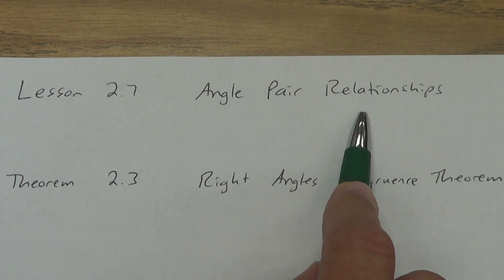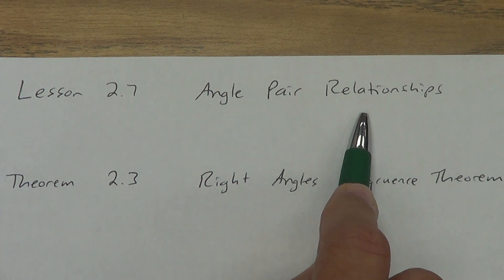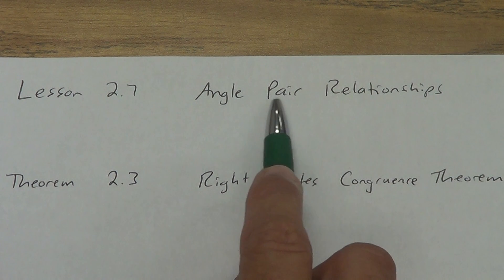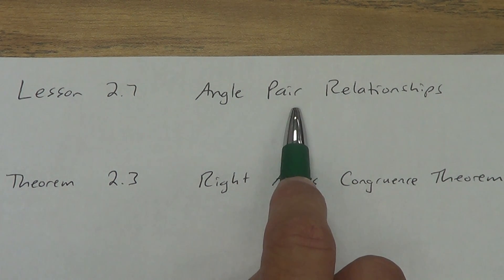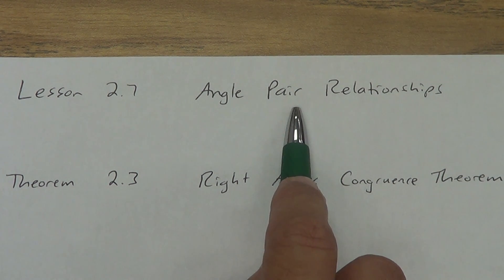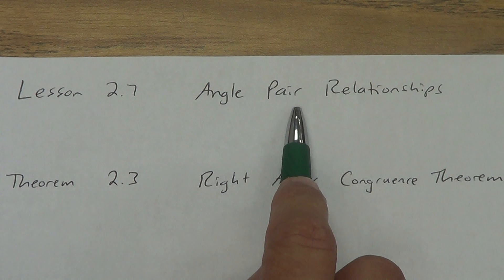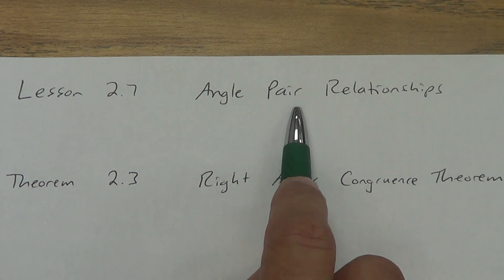We're going to be proving some stuff about different pairs of angles. Obviously if we say pair, we mean two angles — two at a time. We've got four theorems and one postulate in this lesson. Two of the theorems we use quite a bit, and the postulate we use quite a bit. The other two we don't use very often. I'll give you stars like I do throughout the year: one star, two star, three star. One star we don't use very much — it'll probably show up on a quiz or test, but not on your midterm or final exam.